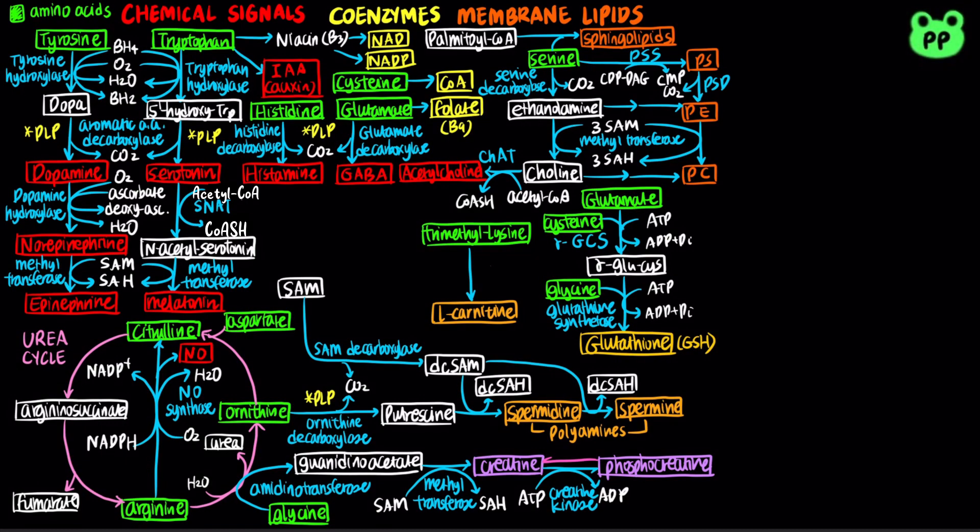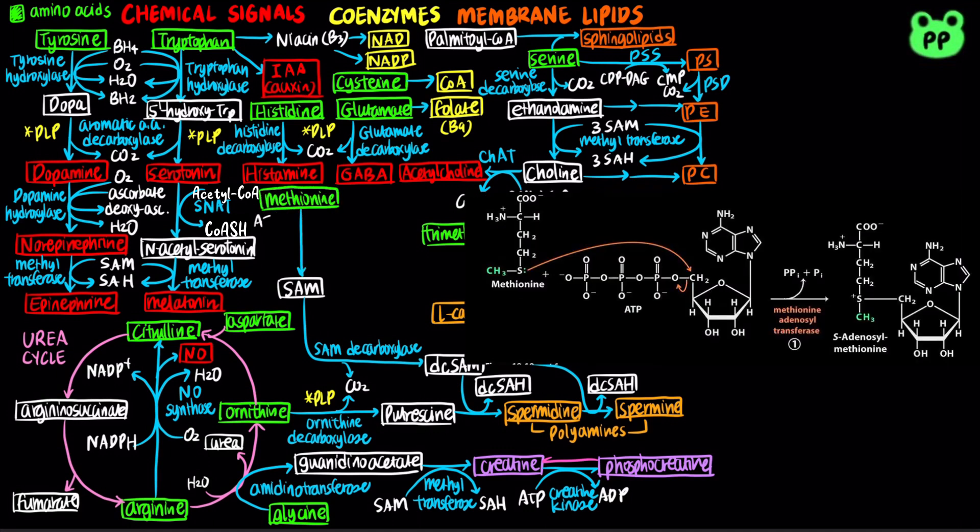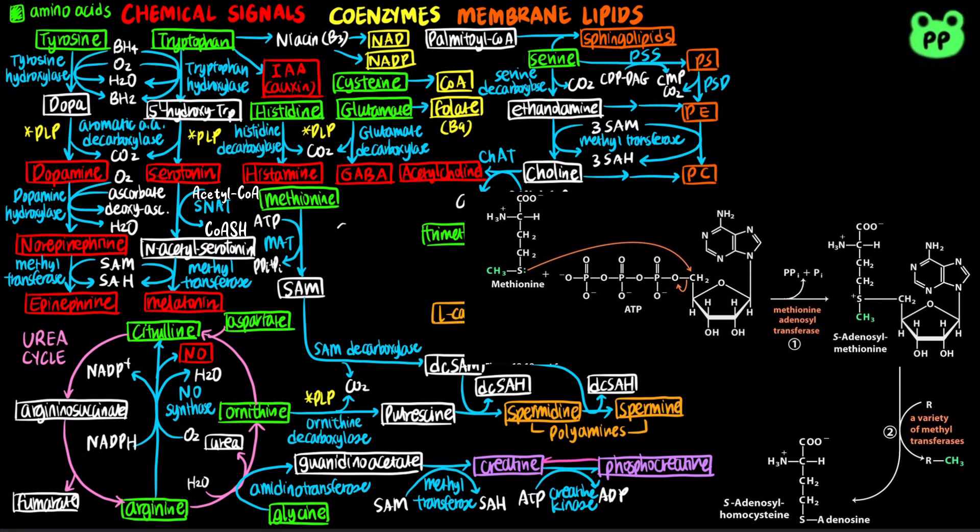Note that many pathways I've covered so far require the methyl donor S-adenosylmethionine, which is derived from methionine by methionine adenosyltransferase. Therefore, methionine also serves as a precursor to epinephrine, melatonin, phosphatidylcholine, polyamines, and creatine.